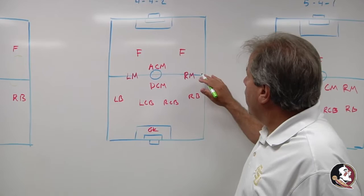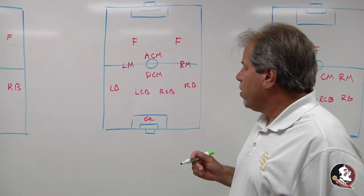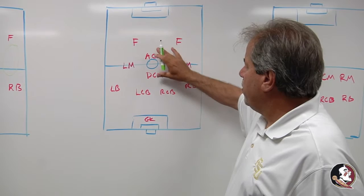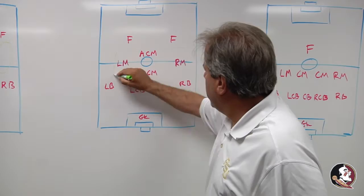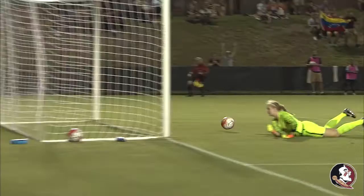Here we have a 4-4-2 with a diamond in the middle of the midfield. Again, this is widely used throughout the college game. They put the extra number in the midfield to kind of block up the opponent being able to attack in this area here, while still having two forwards. The advantage to this is you do have a lot of numbers forward — it gives you a chance to get forward — but you have a bigger block here in the midfield to defend.